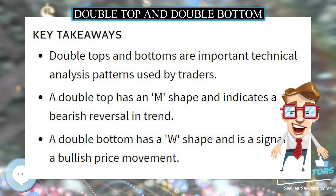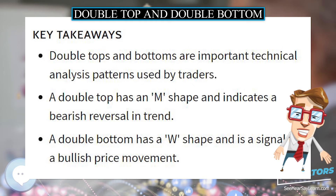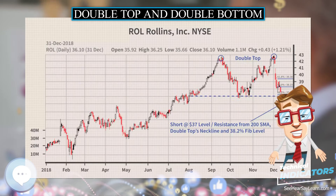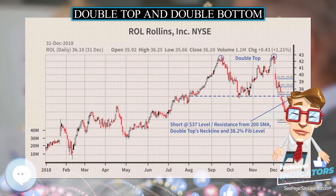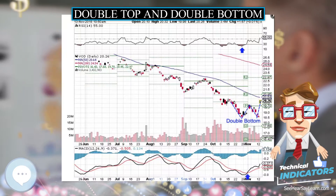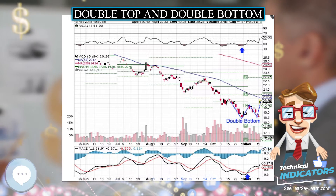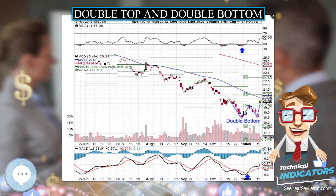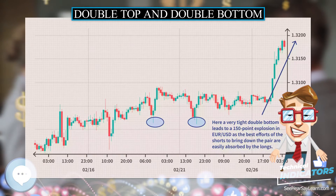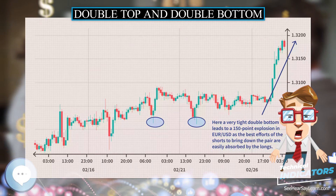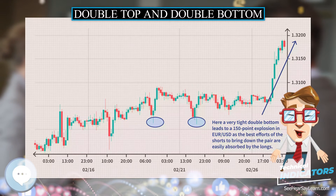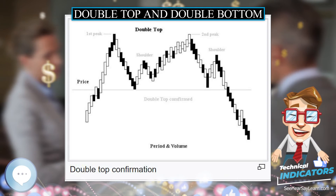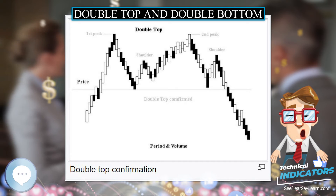Volume is another indicator for interpreting this formation. Price reaches the first peak on increased volume, then falls down the valley with low volume. Another attempt on the rally up to the second peak should be on a lower volume.